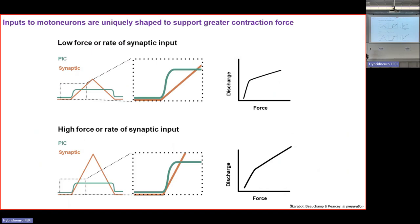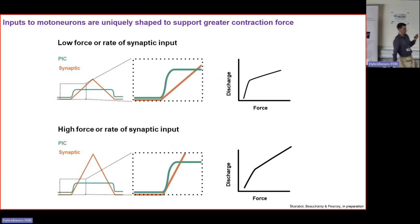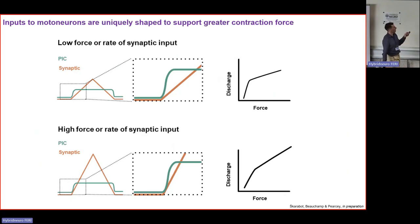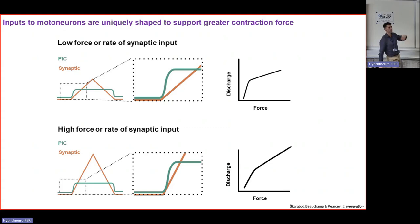Our interpretation is that as excitatory synaptic input increases — either in rate or strength — the relative contribution of PICs decreases. PICs have a relatively slow activation time of around one second. In conditions of very high or fast synaptic input, the excitatory drive effectively overrides the relative contribution of PICs, resulting in more linear firing. However, PICs still catch up and produce greater prolongation at higher force levels.